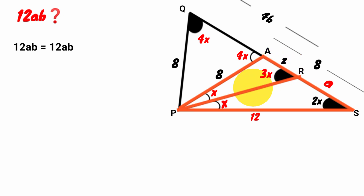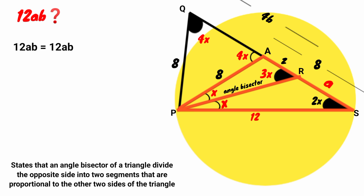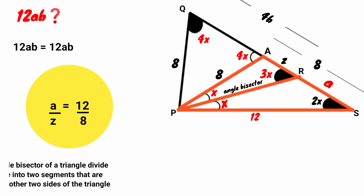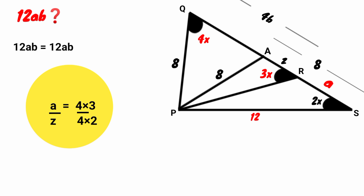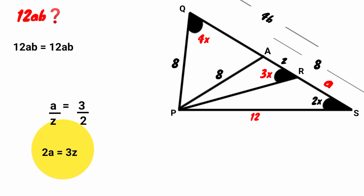Now look at line PR — it is a cevian of the triangle and it bisects this angle, making it an angle bisector of triangle APS. The angle bisector theorem states that the angle bisector of a triangle divides the opposite side into two segments that are in the same proportion as the other two sides. So A over Z equals 12 over 8. Simplifying: 12 is 4 times 3, and 8 is 4 times 2, so A over Z equals 3 over 2. Cross multiplying: 2A equals 3Z.